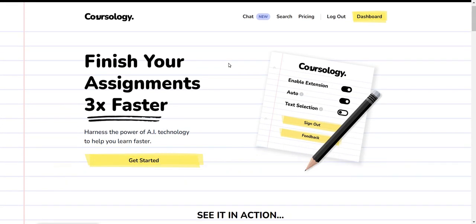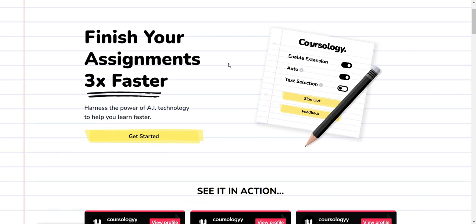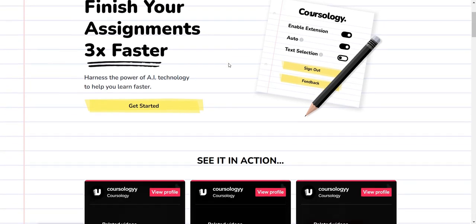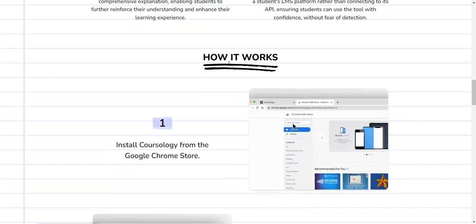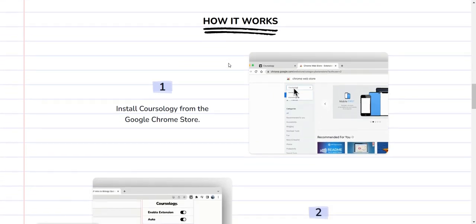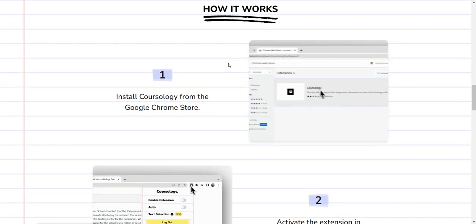Let's go straight to the point. What is Corsology? This is an AI extension that promises to help you do your assignment three times faster. And trust me, it does. How does this platform actually work? You probably have heard about this platform from TikTok because they are actually going viral on TikTok right now.